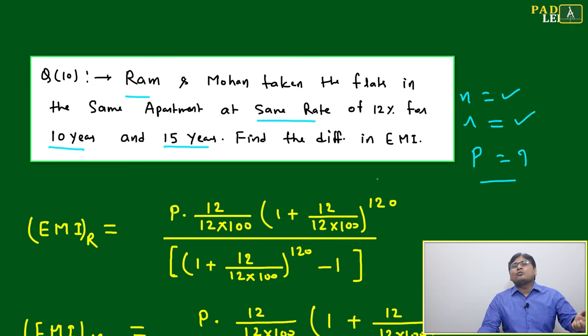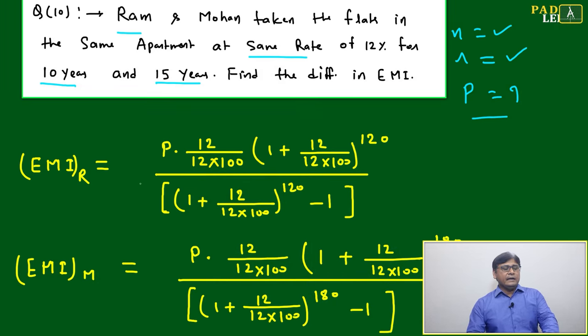Maybe the flat cost is 70 lakh. Out of 70 lakh, maybe he has taken the loan of 50 lakh and 20 lakh paid. Maybe Mohan, same 70 lakh, he has taken 50 lakh and he has paid 20 lakh in some different way. Various options, we can't predict anything from our side related to the value of P.